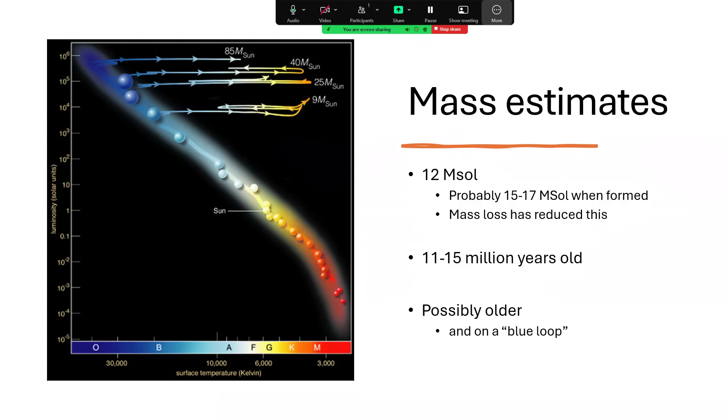So it's somewhere between the 9 solar mass and 25 solar mass tracks that you can see on this Hertzsprung-Russell diagram of temperature, color versus mass and luminosity.